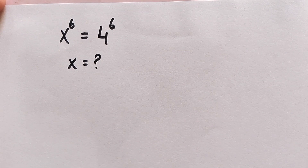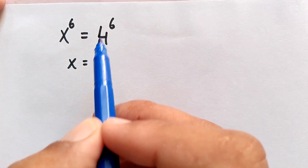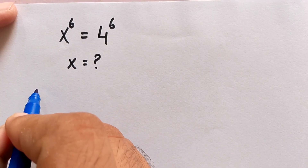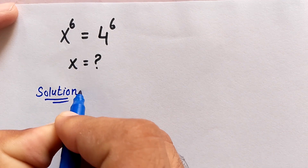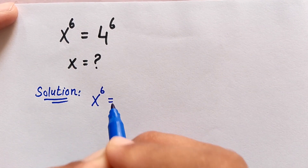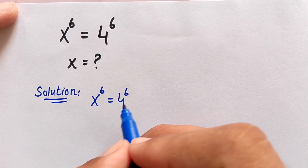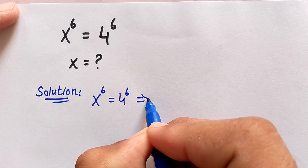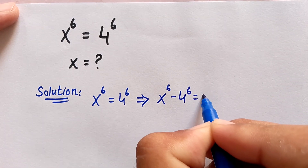Hello, you are welcome. We have to solve this interesting question: x to the power of 6 is equal to 4 to the power of 6, and we have to find the value of x. We move 4 to the power of 6 to the left side, so this becomes x to the power of 6 minus 4 to the power of 6 is equal to 0.